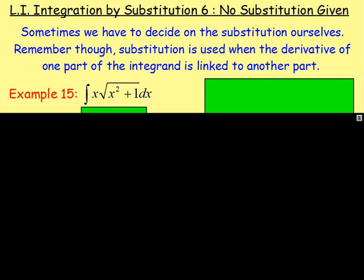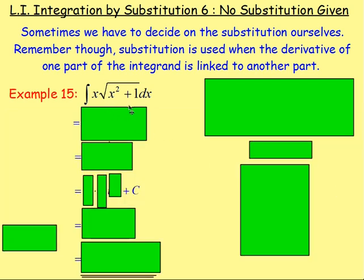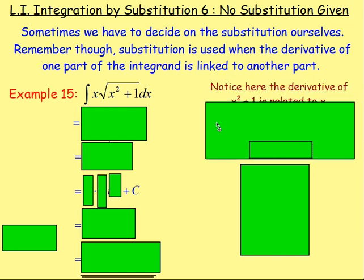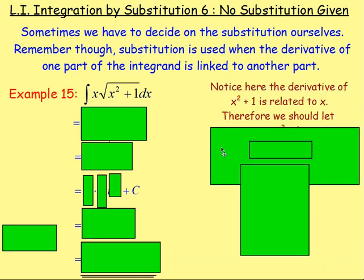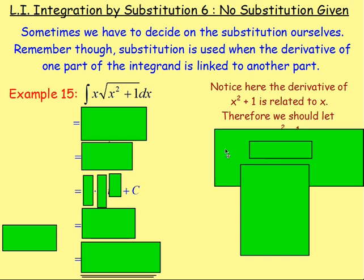Let's try this example. We want to integrate x times the square root of x squared plus one. I'm not given a substitution here, so I need to work out what it is. I'm recognising that if I differentiate the part under the square root, that will give me 2x. And x is already part of the integrand — we've already got an x here. So what we do is we let u equal the part under the square root.